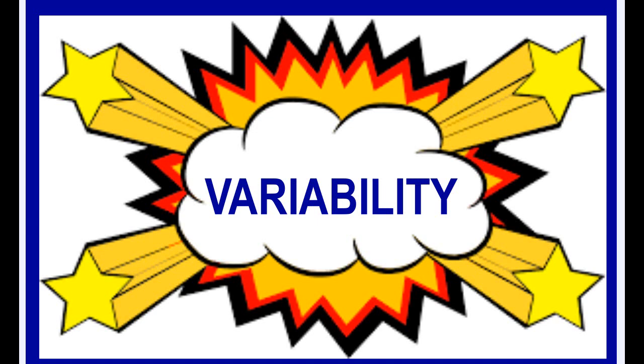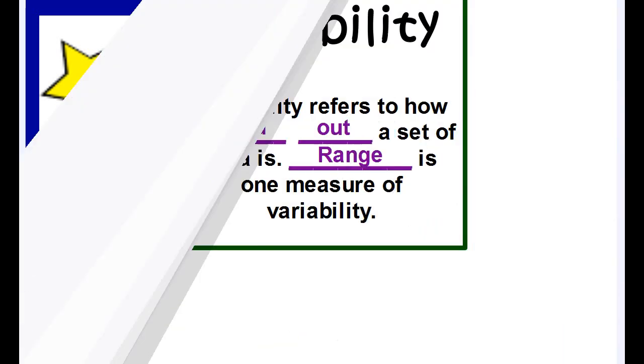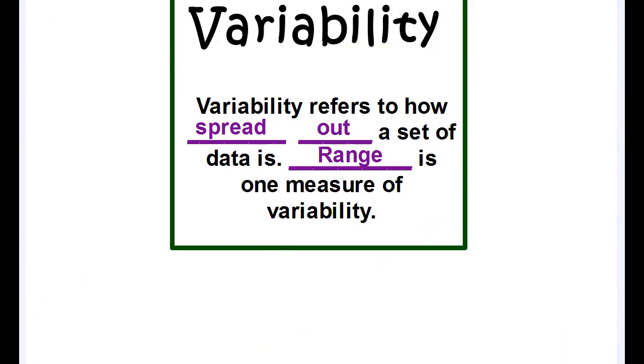That's what variability is. It's situations or data where there's a lot of different answer choices. So let's write this down in your notes. Variability refers to how spread out a set of data is. And we've actually already talked about the spread of the data set. We've called it the range. The range is one measure of variability that we're going to learn about. So you can look at how spread out something is by finding the range by subtracting high minus low.